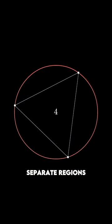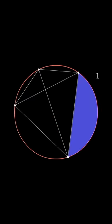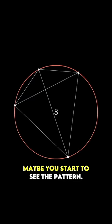Add a fourth point, add lines connecting it to all the previous ones, and again count up how many regions the circle's been divided into. This time we get eight. Maybe you start to see the pattern.